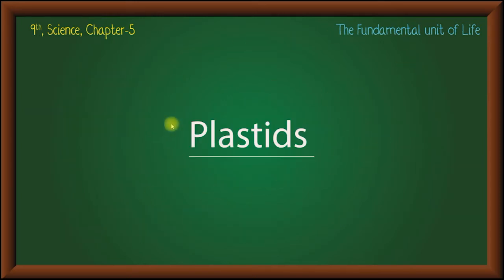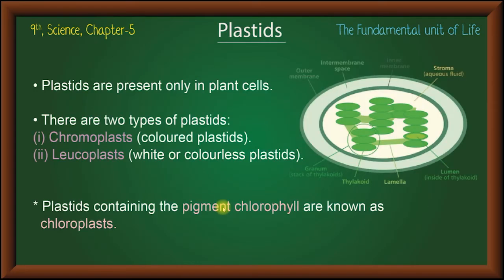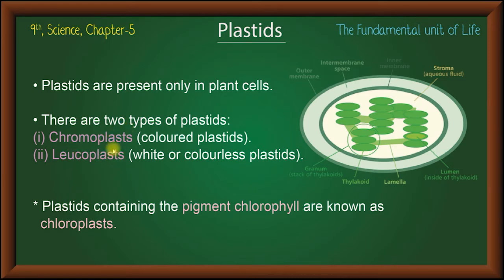Next, plastids — which are present only in plant cells, not animal cells. There are two types of plastids: chromoplast and leucoplast.